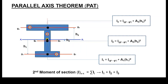We do likewise for segment three: measure the distance from the global axis to the individual axis of segment three, use the general rectangular formula, calculate the area, and work out the total second moment of area for segment three. The total of these three gives you the total value of I for the composite form: I_xx equals I1 plus I2 plus I3.